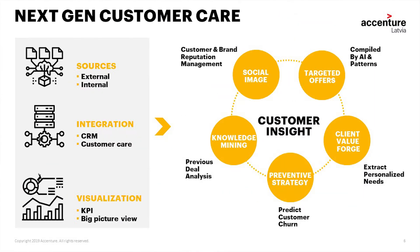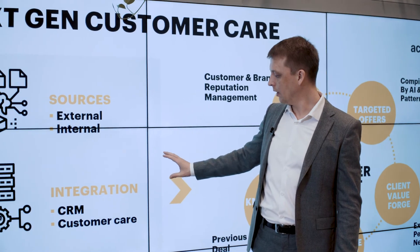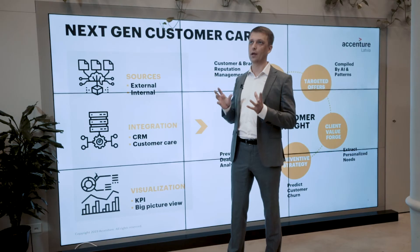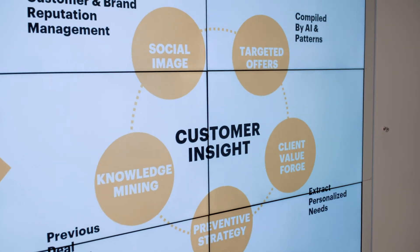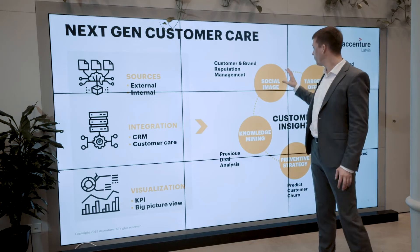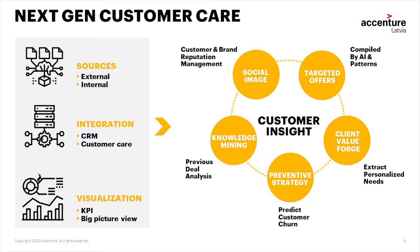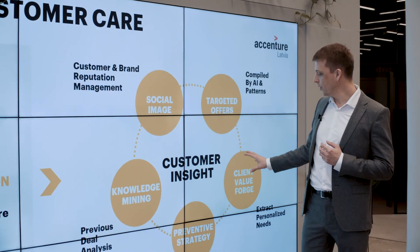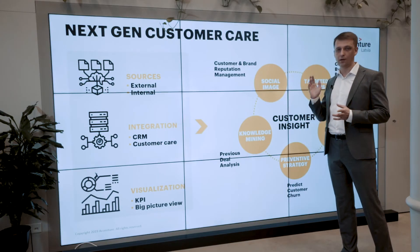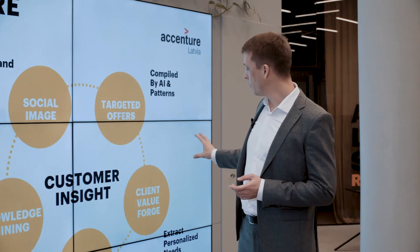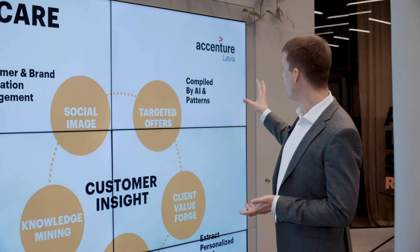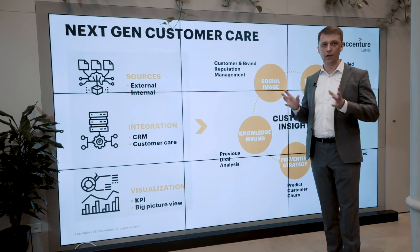This is what we call next-generation customer care. We combine three components: first, automated analytics of external sources with sentiment analysis; second, integrating this brain with existing CRM and customer systems; and finally, visualizing results for users. Combining these tools, we get five groups of customer insight benefits: monitoring and measuring online reputation of our brand and our customers' brands; proactively analyzing historical data; predicting cases of customer churn and raising red flags in advance; preparing personalized offers for specific clients; and making targeted campaigns based on the needs of specific client groups.